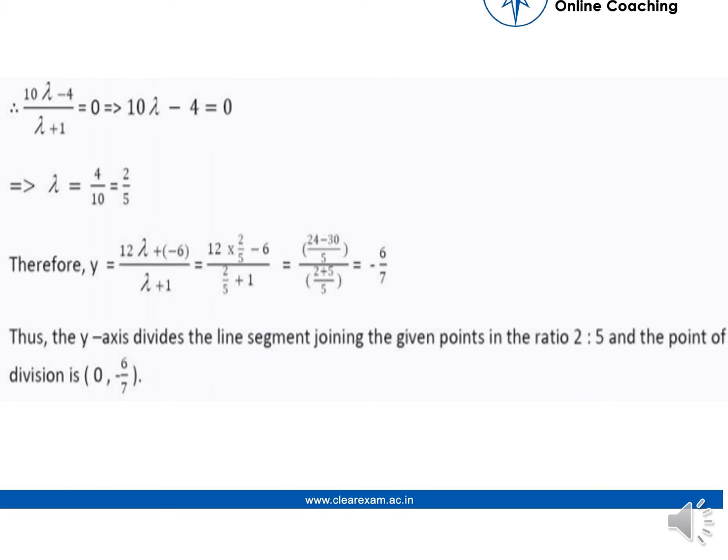So by simplifying, we can find the value of lambda that becomes 2 by 5. Again for y-axis, we have the value of lambda as minus 6 by 7. So when we divide this line segment joining these points in the ratio 2 by 5, the point of division becomes 0 to minus 6 by 7.